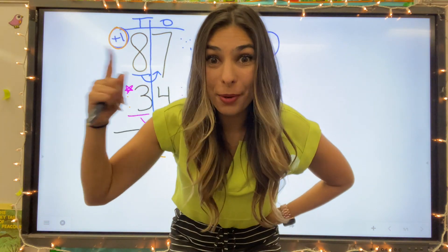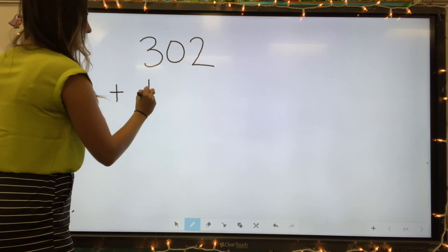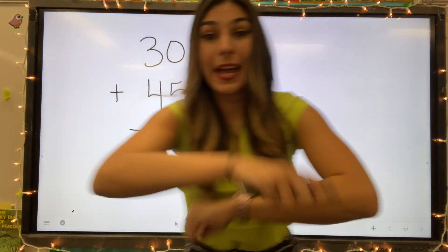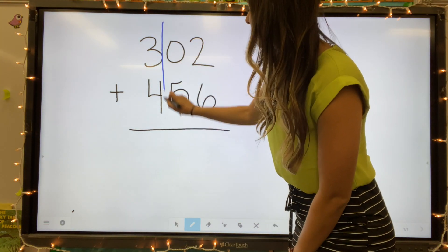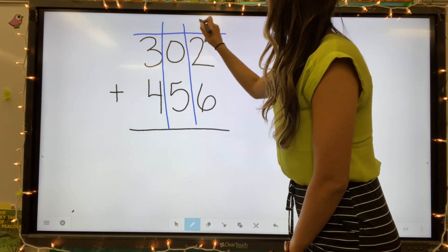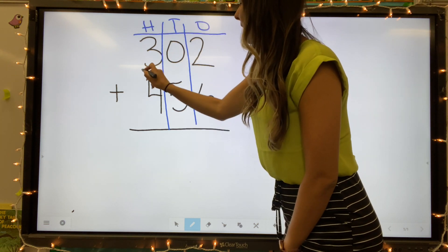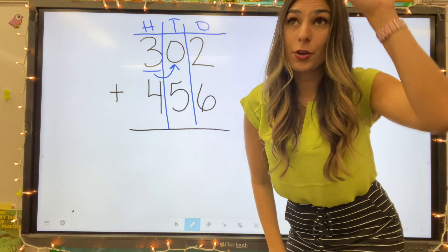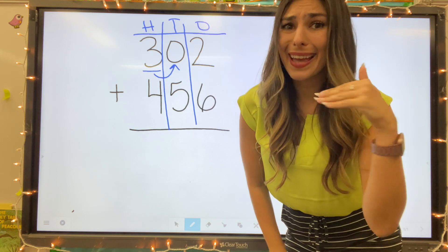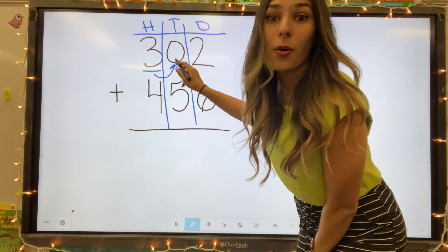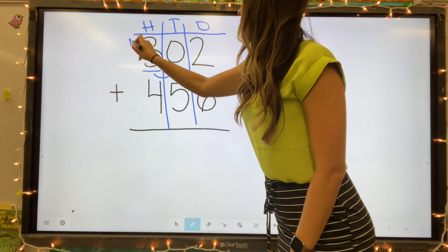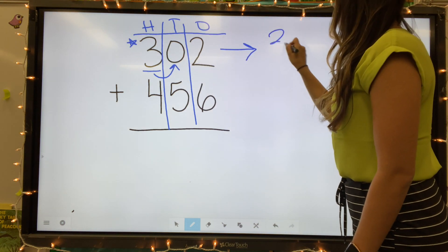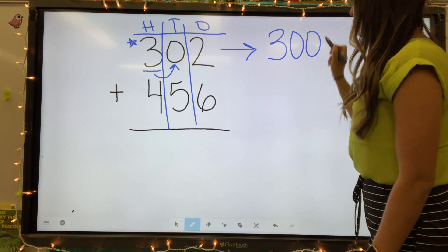All right, let's do a bigger problem. Well, first thing I need to do is round each number. So to round, I'm going to follow my usual steps. My place is the three. I'm looking next door at that zero and I'm asking myself five or greater, add one more, four below, let it go. That zero is way less than four. So we're going to keep this three and round 302 to three, make that a hundred, 300.